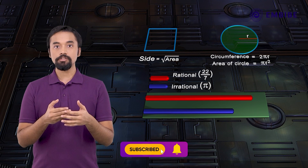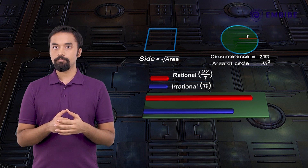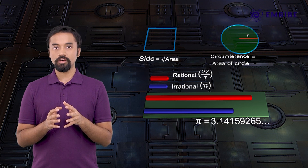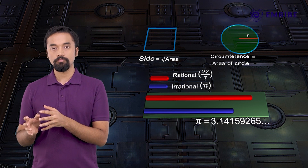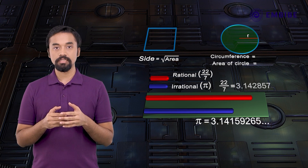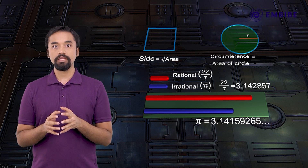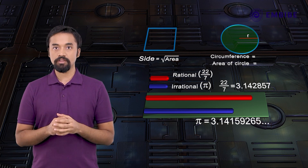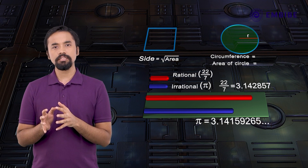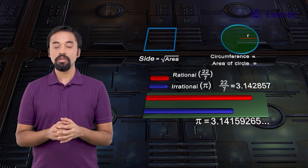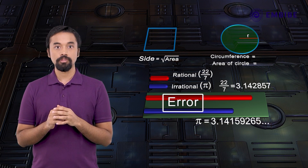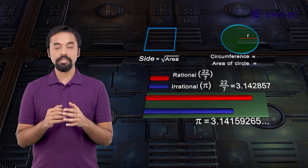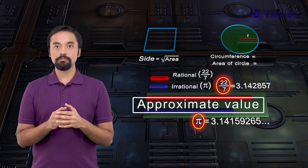For example, we use 22/7 in place of pi. As noted earlier, π = 3.14159265…, whereas 22/7 = 3.142857…. Thus π ≠ 22/7, but 22/7 is quite near to pi. Such a substitution gives rise to an error, but this error is negligible in most practical calculations. 22/7 is called an approximate value of pi.